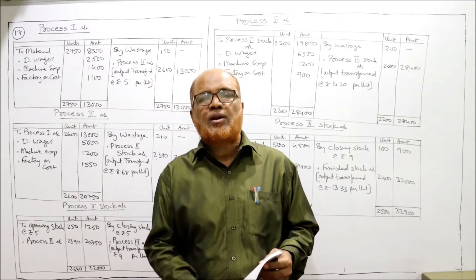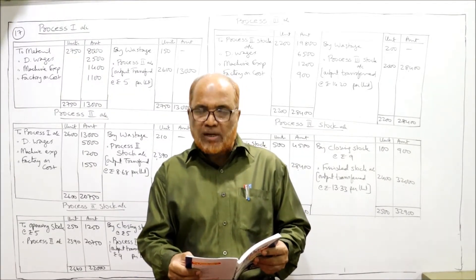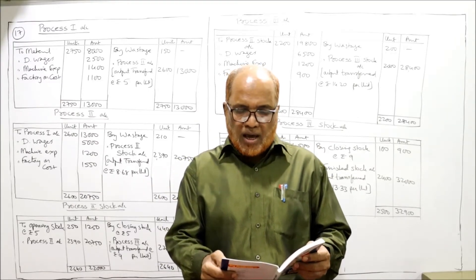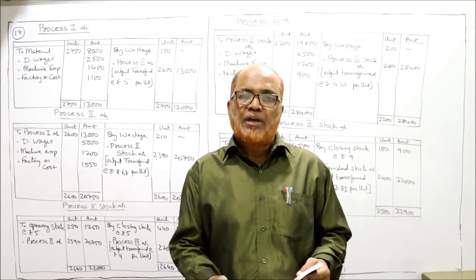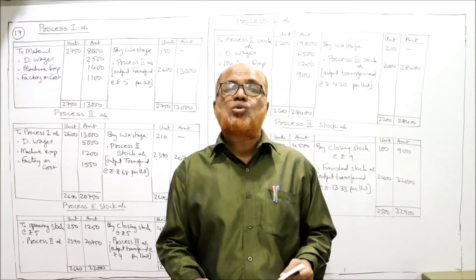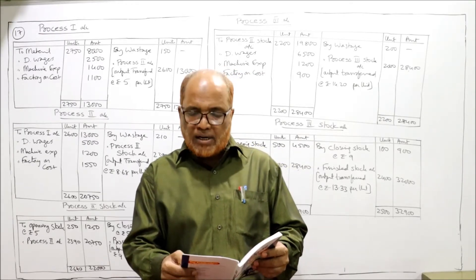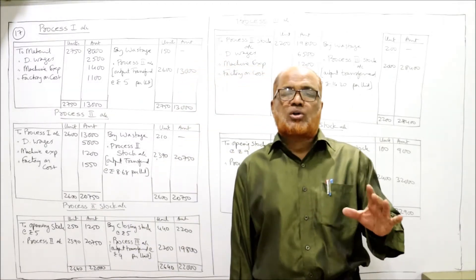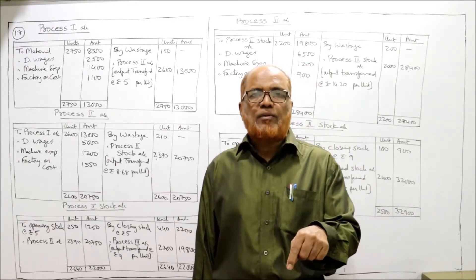For the second process, wastage is 210, opening stock is 250 units, and closing stock is 440 units. For the third process, wastage is 200 — note there is a misprint in the problem where 210 is written, but it should be 200. Opening stock is 500 and closing stock is 100. This is the first problem where we have process stock accounts.